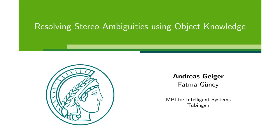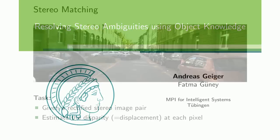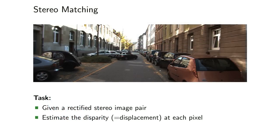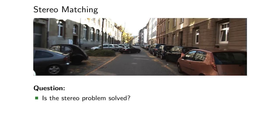In this work, we tackle the classical problem of two-view stereo matching. Given a rectified stereo image pair, our goal is to estimate the displacement of every pixel in the image. While over the past decades there has been great progress towards solving this problem, some difficulties remain.